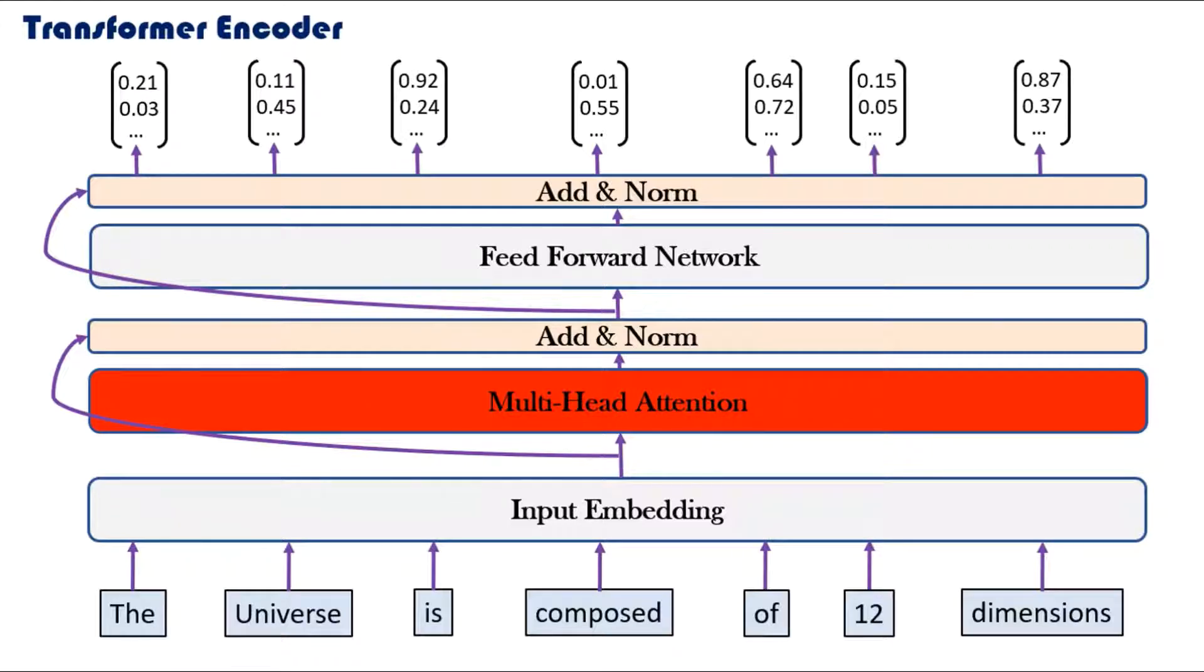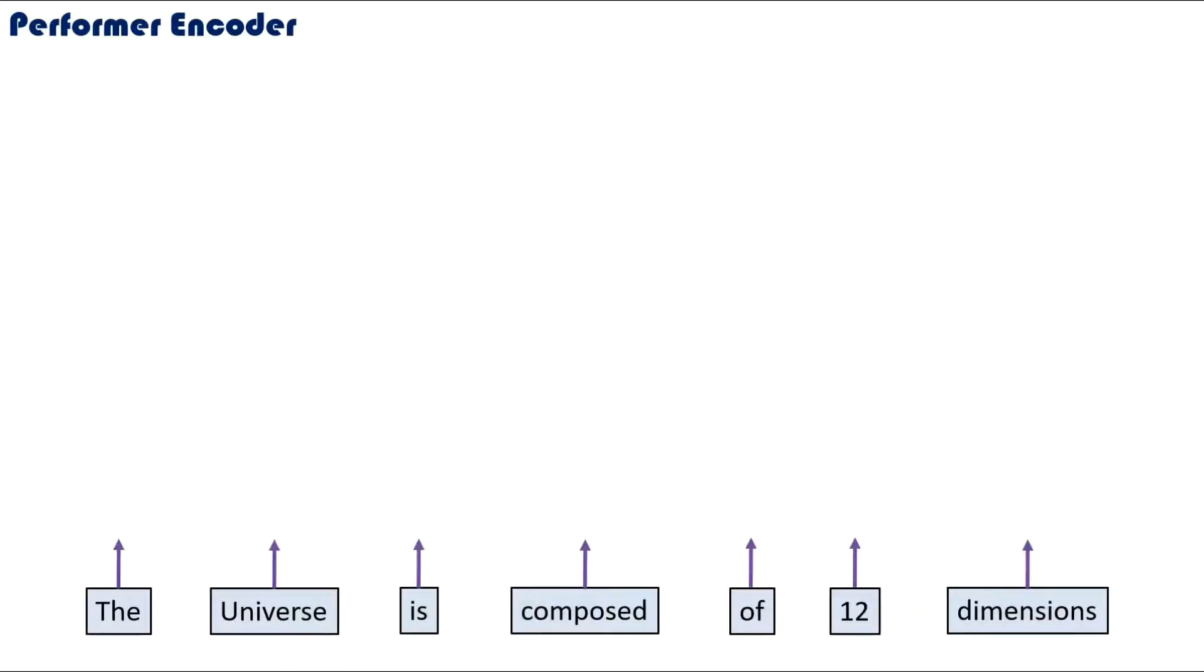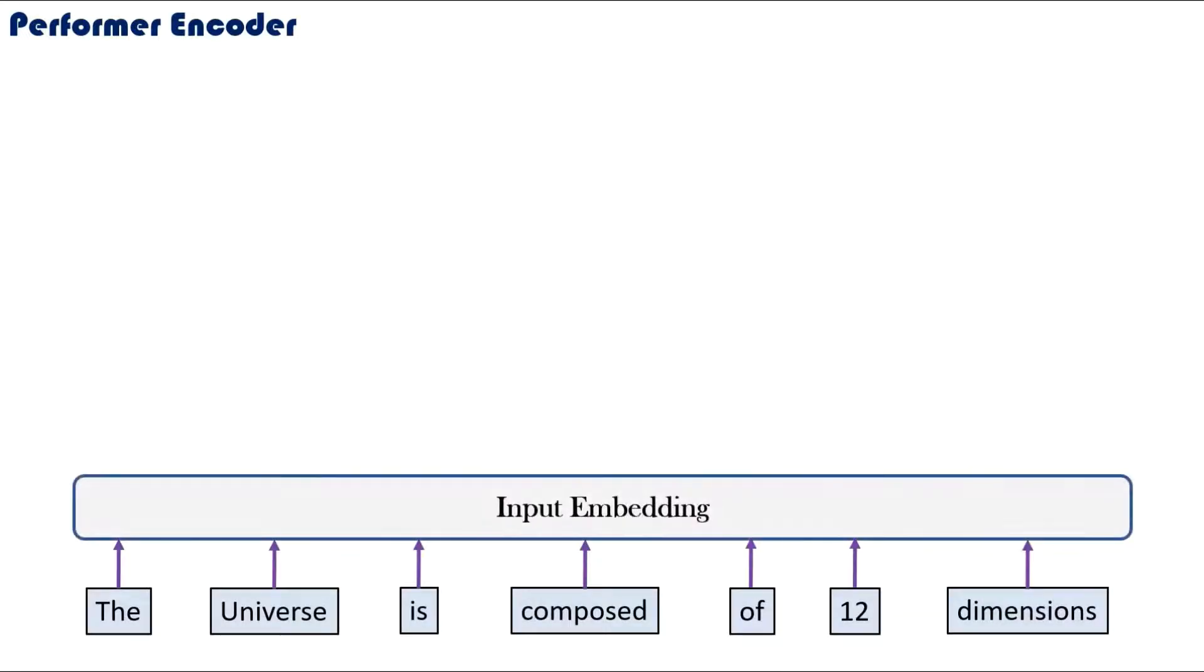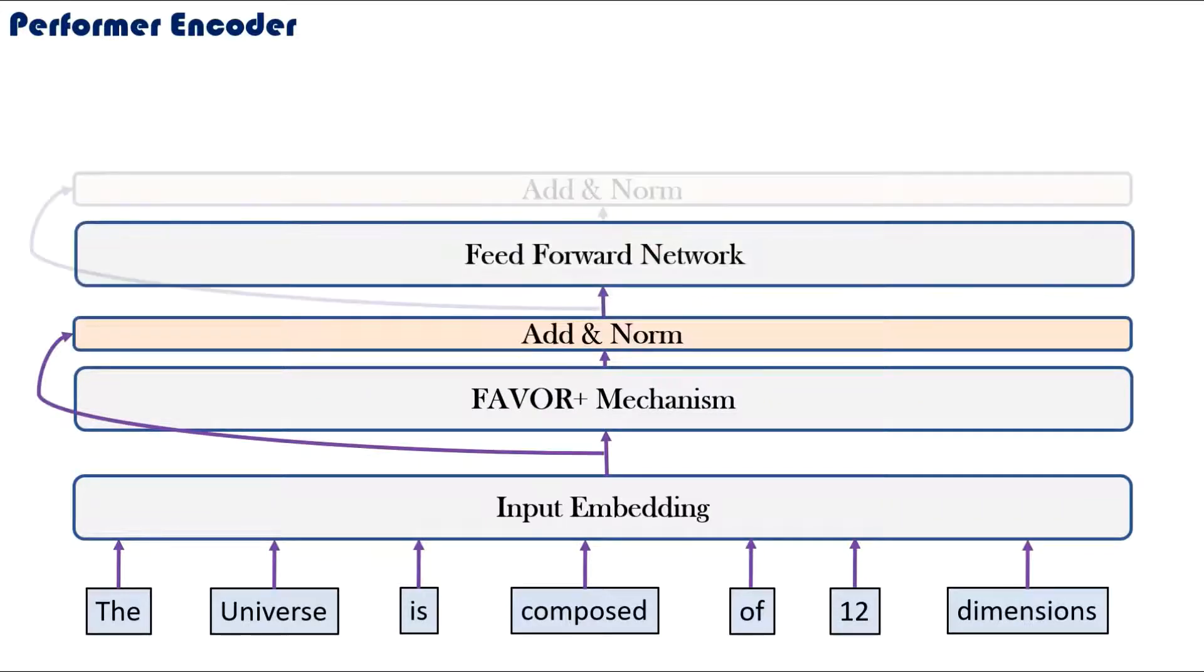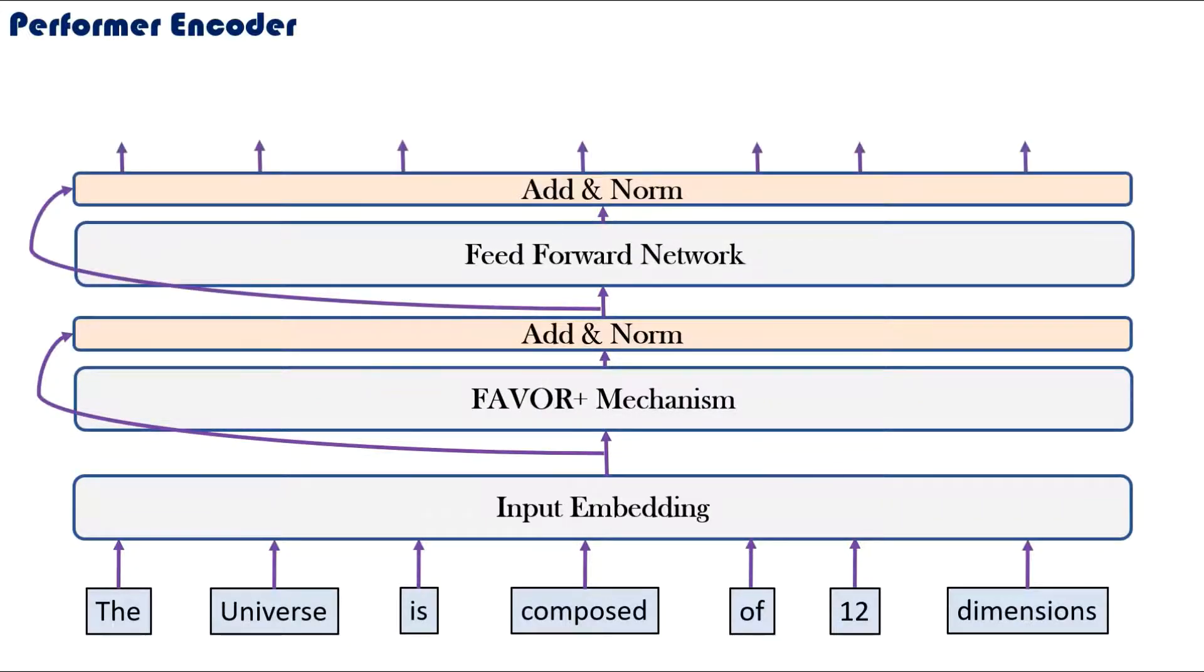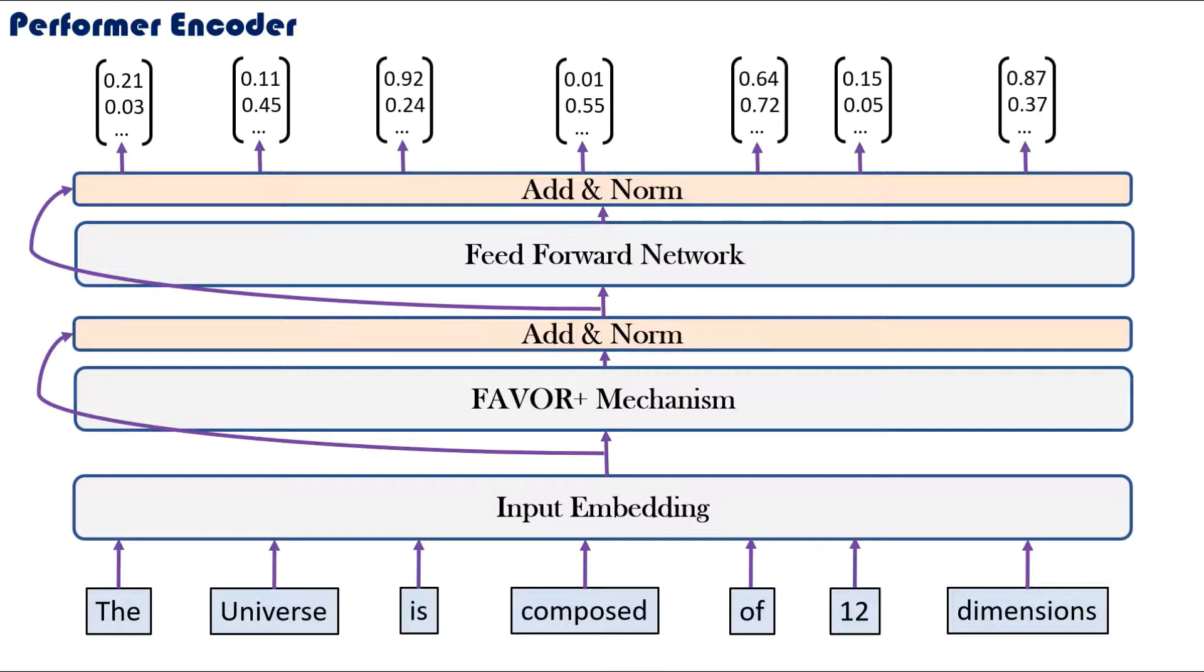First, let's see what are the main differences between the Performer encoder architecture and the Transformer. We have pretty much the same structure as before. In fact, the architecture of the Performer is identical to the Transformer except we have replaced the multi-head attention mechanism.